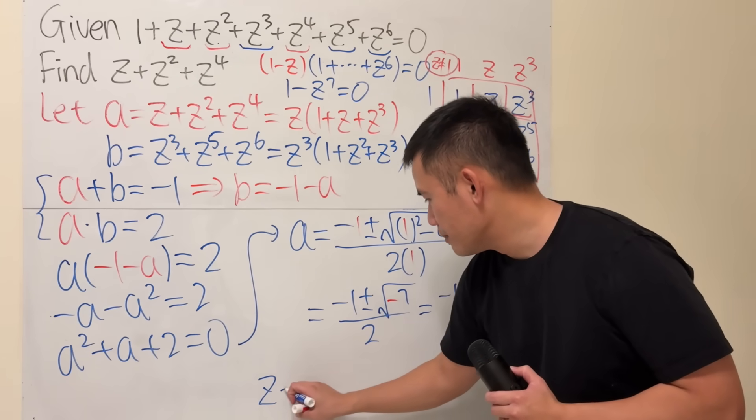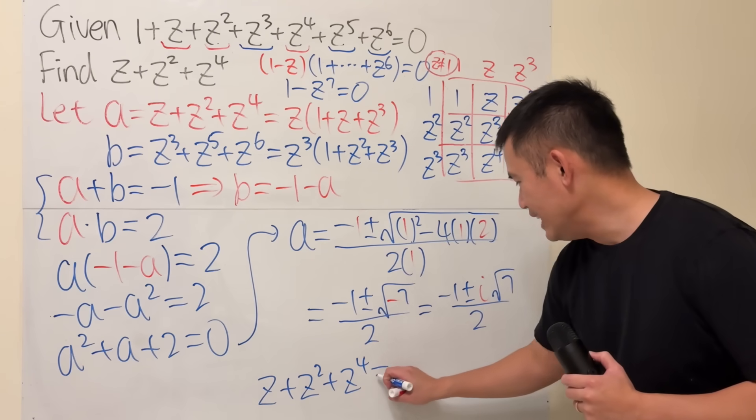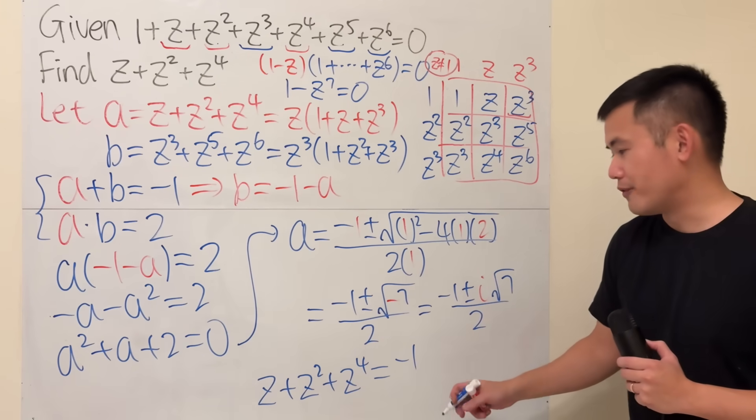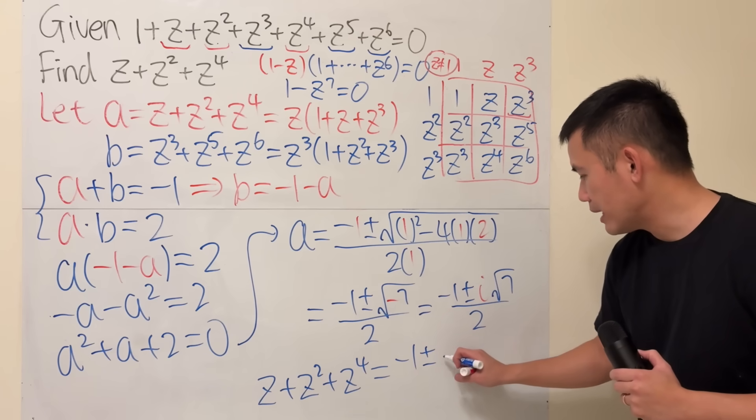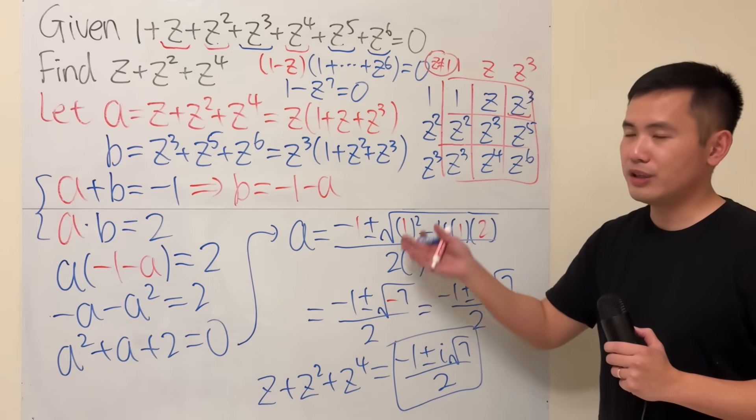So, at the end, I will write this down right here for you guys. Therefore, we know that z plus z squared plus z to the fourth power equals negative 1, and in fact, you have two possible values: plus or minus i squared root of 7 over 2. And this is the answer to that.